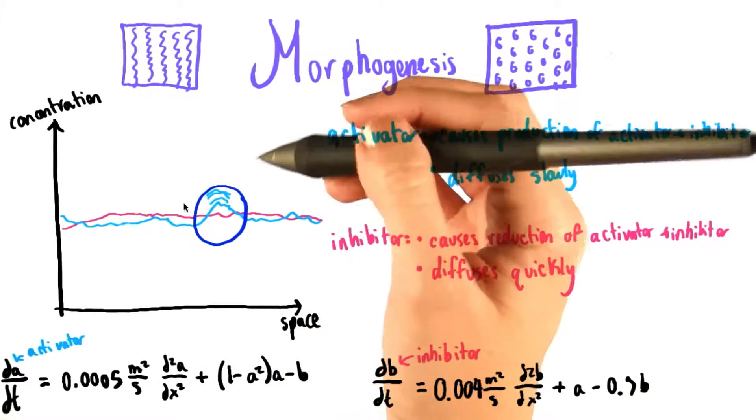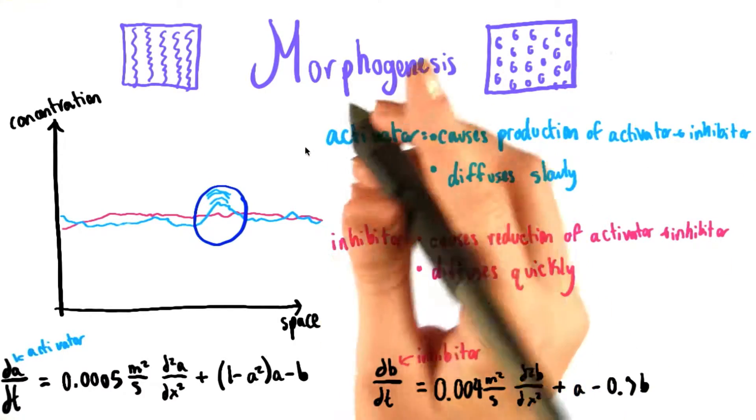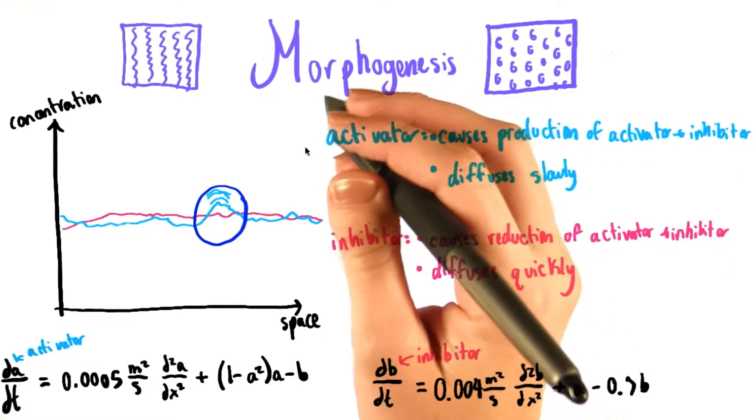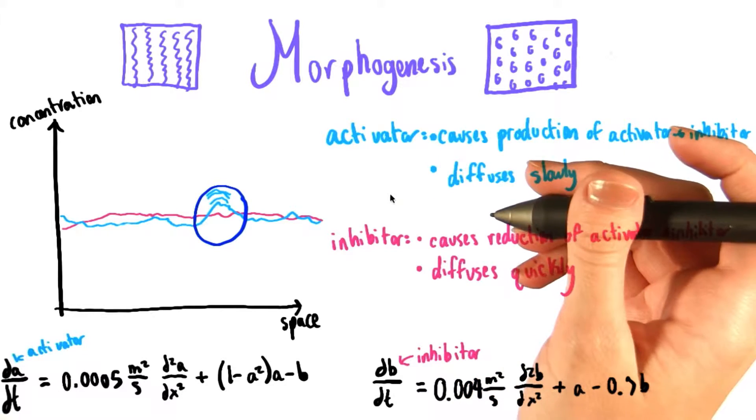And Alan Turing, of all people, what a brilliant man, had an idea that an initially only slightly random distribution of chemicals can evolve into a stable pattern over time. So we're going to look at one model of how that could happen.